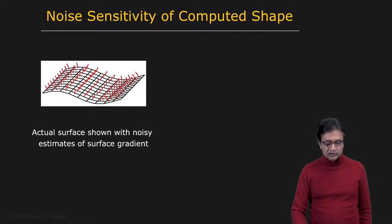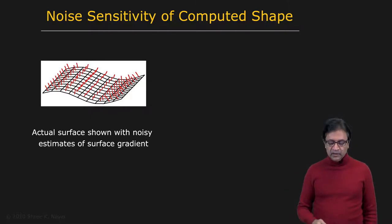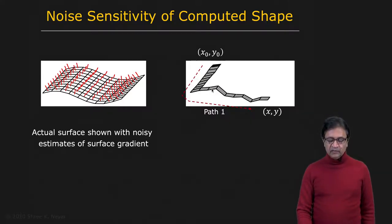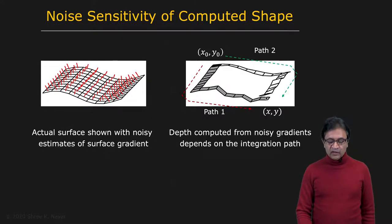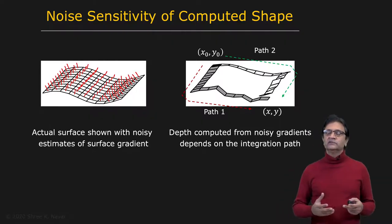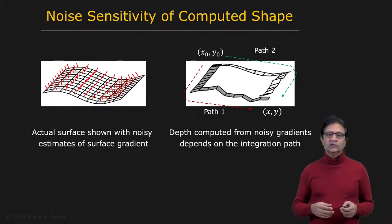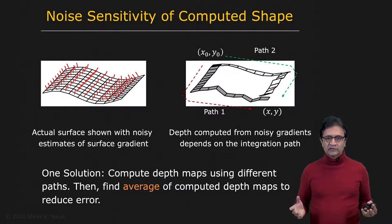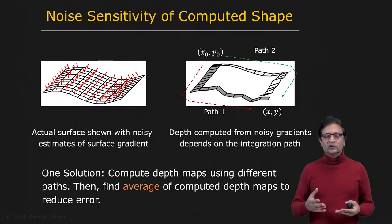What is the effect of noise? If you integrate along some path you might get one depth value at point (x, y), but if you take a different path you end up with a different depth. The errors accumulate as you integrate, so different paths likely give different results. One ad hoc way of dealing with this is to choose many different paths to integrate the surface, get many depth values at each pixel, and simply average them with the hope of removing some noise.